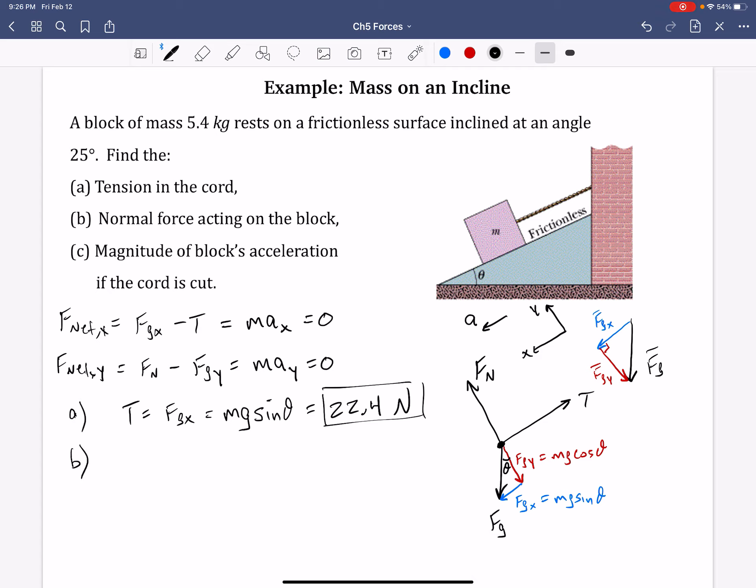Part B, what's the normal force on the block? Well, we can use the Y equation for that. Fn equals Fgy, and Fgy written out is Mg cosine theta. Knowing each of those, we should get 48 Newtons.